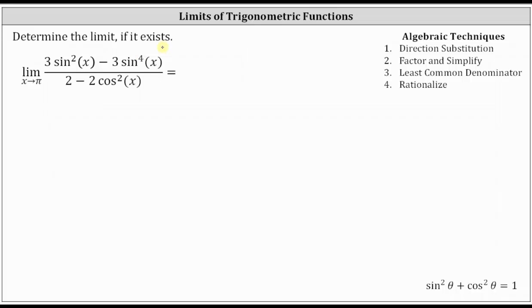We want to determine the limit if it exists. Looking at the given function, since the domain of the sine function is over the real numbers, and so is the domain of the cosine function, and both are continuous over their entire domains, we may be thinking we can evaluate the limit by performing direct substitution. However, if we perform direct substitution, we will have the indeterminate form of zero divided by zero.